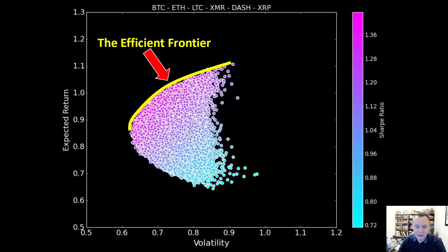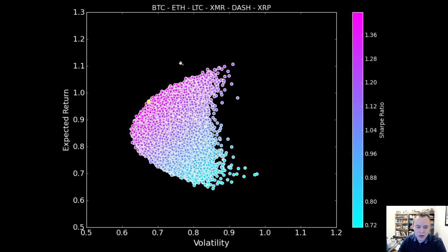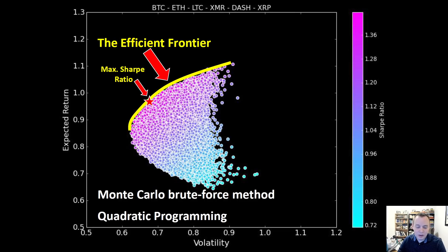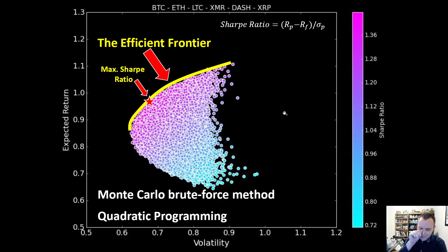This is the efficient frontier and this yellow dot you see right here is your maximum Sharpe ratio. We're using a Monte Carlo brute force approach to identify it. The Sharpe ratio is your returns minus your risk-free rate — like the treasury yields — divided by the standard deviation of the excess returns. The reason this is important is because when you're looking at your Sharpe ratio you would like it to be as high as it can be, because for every unit of risk or volatility you're taking on, you're getting the highest expected return.